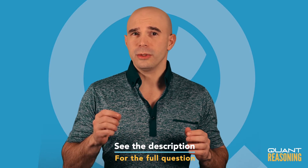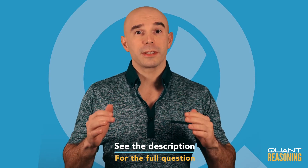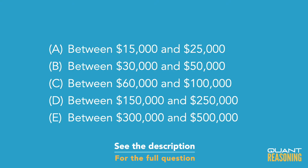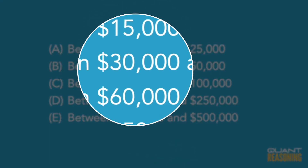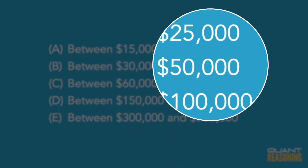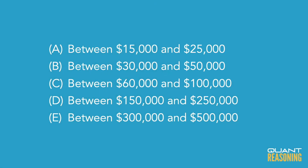Before we even read the question, notice that the answer choices all give us ranges. And importantly, none of the ranges repeat the same minimum or maximum. These answer choices are all different from one another, and that's making me think that I should be able to answer the question by just solving for the top of the range or by just solving for the bottom of the range. I shouldn't have to solve for both.